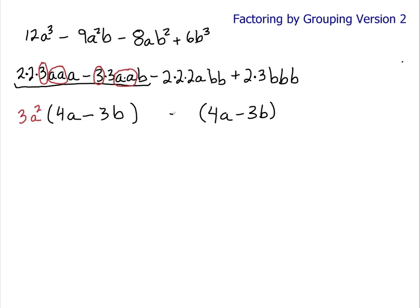Well, I need a negative 2. I'll write that down over here. Negative 2, because negative 2 times 4 will give me a negative 8. What else is missing? I'm missing B square. And let's see. Negative 2B square times 4A will give me negative 8AB square.